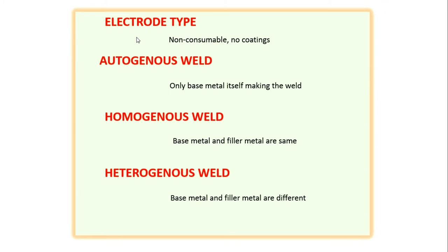We are using a non-consumable electrode made of tungsten — there is no coating or flux. Because of this, we must use shielding gases. The types of shielding gases that can be used include argon, helium, hydrogen, nitrogen, oxygen, CO2, or a mixture of any of these, depending on the workpiece material. Regarding welding types, all three — autogenous, homogeneous, and heterogeneous — are possible in plasma welding. You can use a filler metal or make the joint without filler metal.